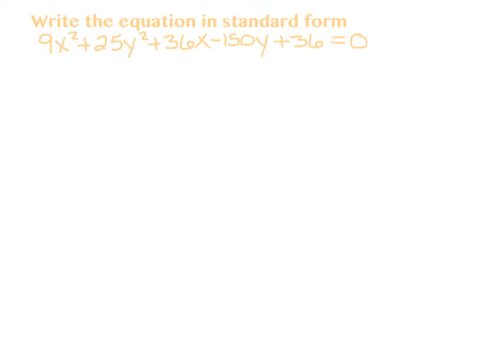In this example, I've given you a general form equation — that's where it's multiplied all out. I'm going to ask you to write it in standard form. First you have to figure out what kind of conic section it is. When we did circles, we had an X squared and a Y squared with exactly the same coefficient. When we did parabolas, we only had one or the other. Here we have X squared and Y squared, but the coefficients are the same sign and different numbers — so we know it's an ellipse.